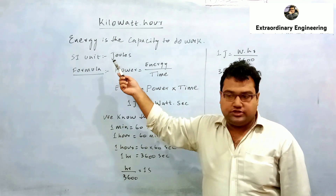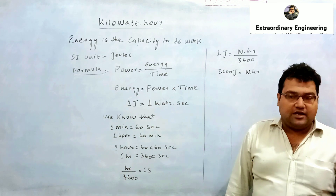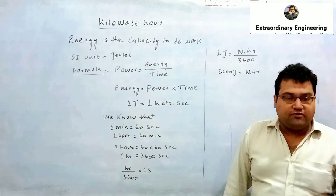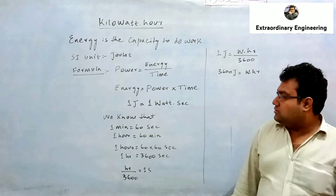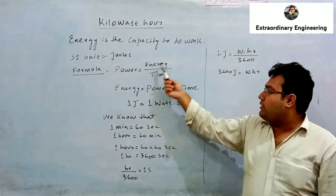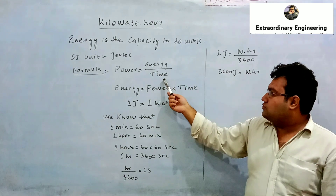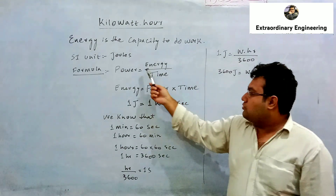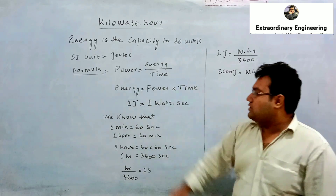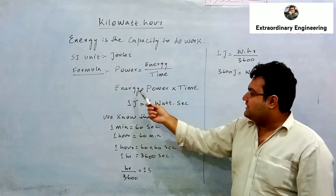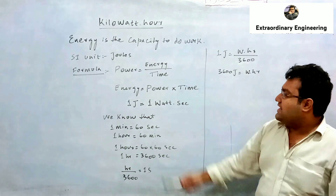The standard unit of energy is joules, but we can derive another unit of energy using the formula of power. The formula of power is: Power = Energy / Time. If we move time to the left side of the equal sign, it will be multiplied by power, so the formula becomes: Energy = Power × Time.